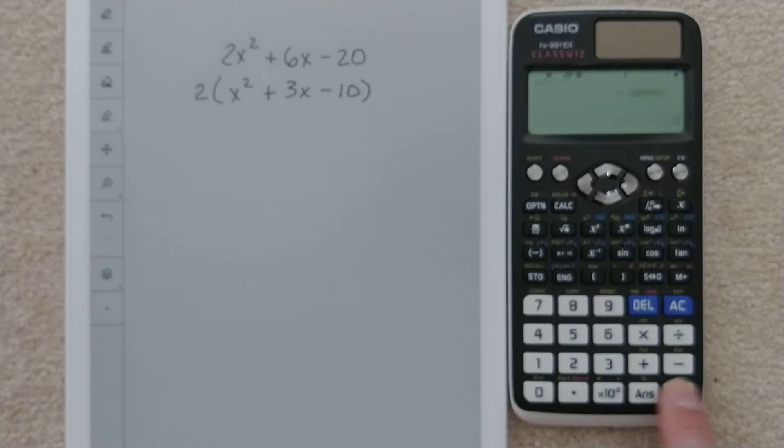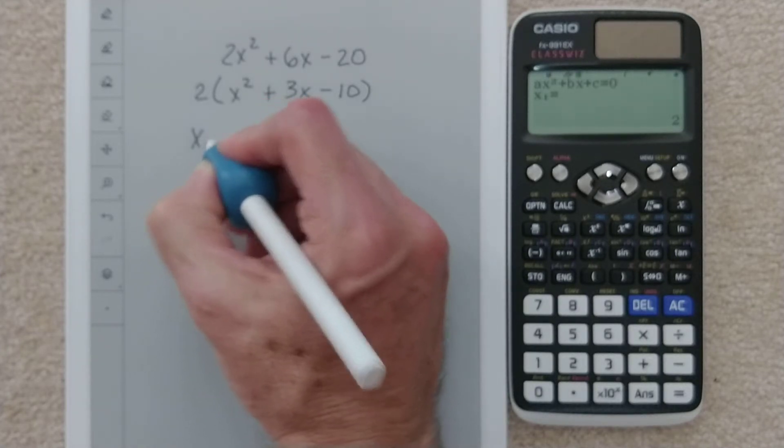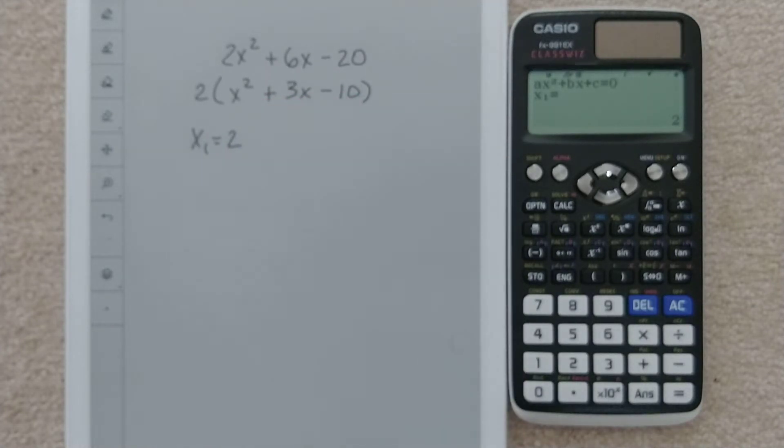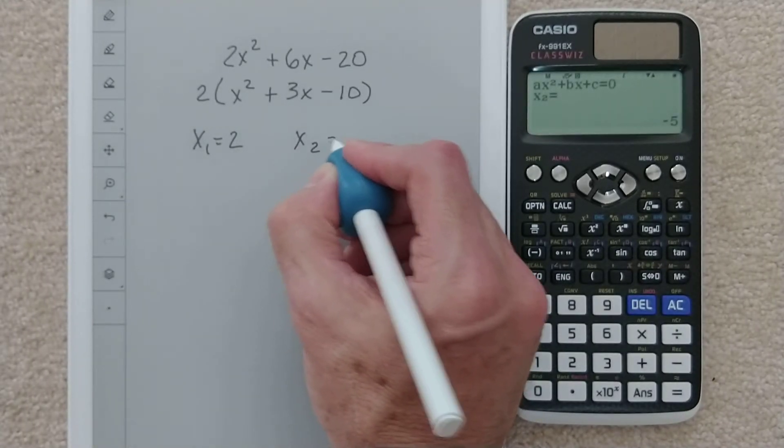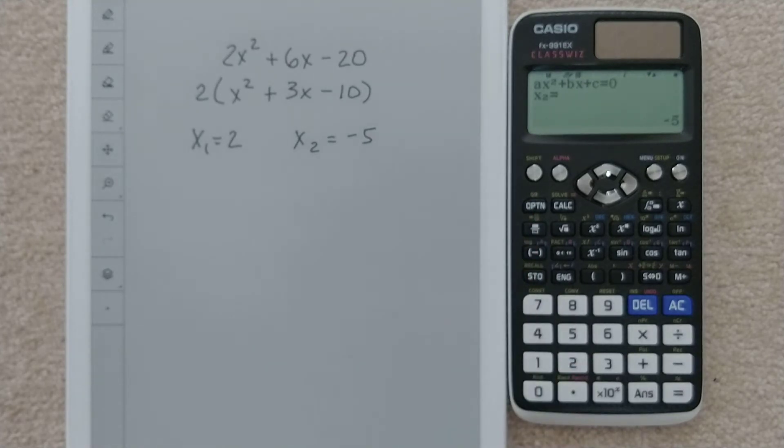Then you hit Equal again. And it says, x1 equals 2. So x1 equals 2. That's our first root. Then I'm going to hit Equal again. x2 equals negative 5. That's our second root.